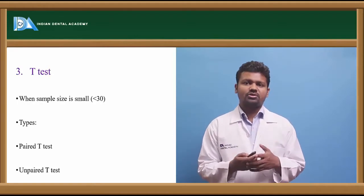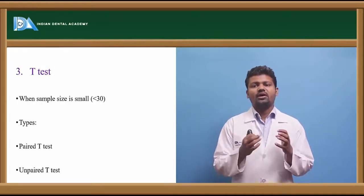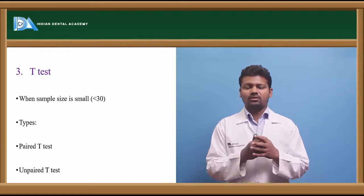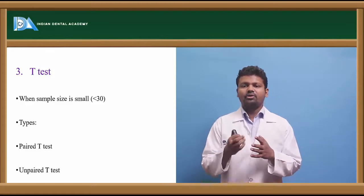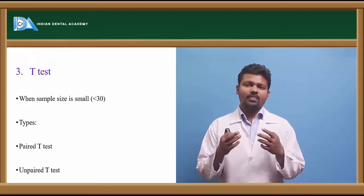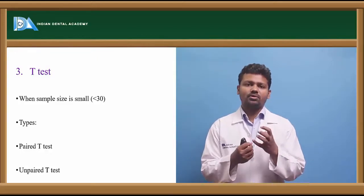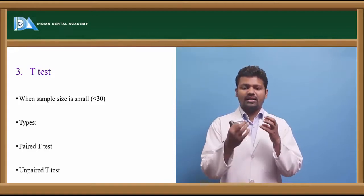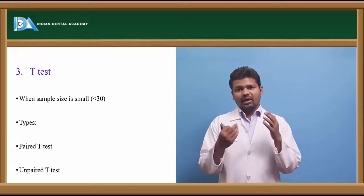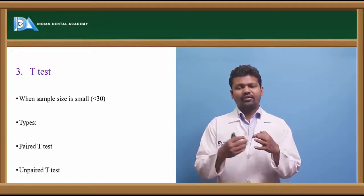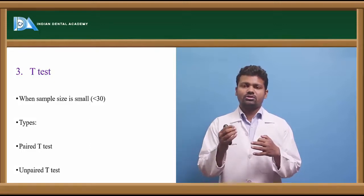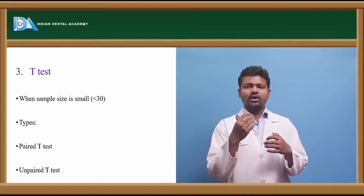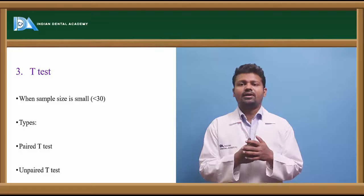There are more tests like ANOVA, which stands for Analysis of Variance. When we want to compare means between two or more groups, like four or six, ANOVA is used. For example, to test the effect of various drugs on tuberculosis—drug A, B, C, and D—we can use ANOVA to determine which drug has the greatest effect.